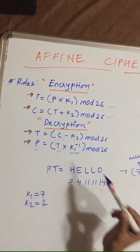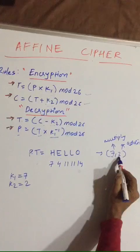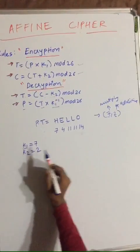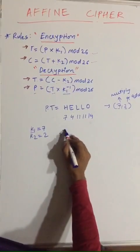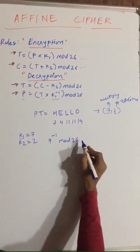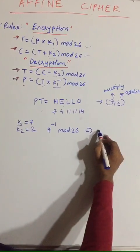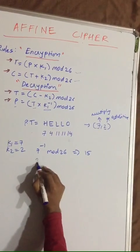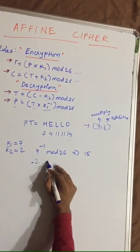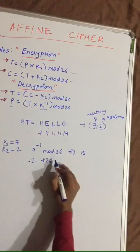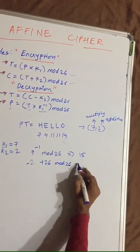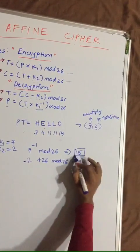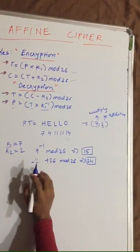Now let's find inverse of both the terms as we have taught you in previous lectures. k1 is 7, so 7 inverse mod 26 will be equal to 15. And 2 inverse plus 26 mod 26 will be equal to 24. We have found both inverses.